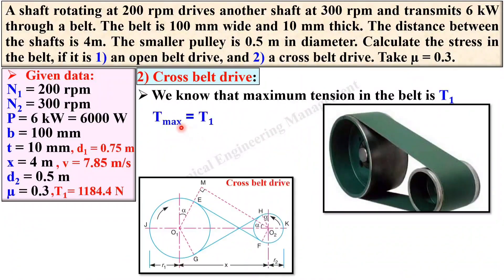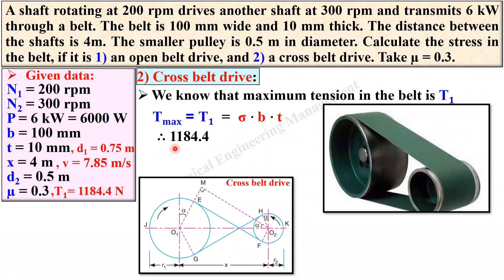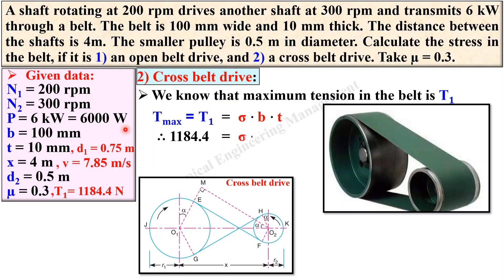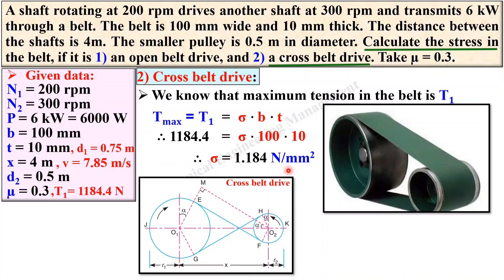The maximum tension t_max = t1 + tc, and since there is no centrifugal tension, t_max = t1 = σ × b × t. Putting t1 = 1184.4 N, b = 100 mm, t = 10 mm and simplifying, we get the stress sigma for the cross belt drive case. That is your answer.